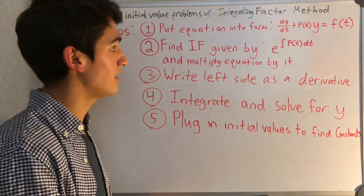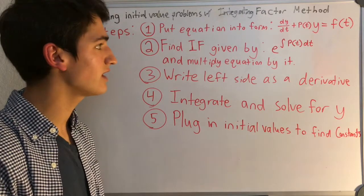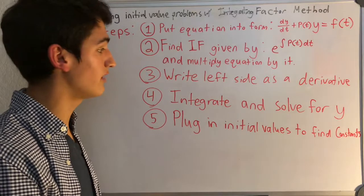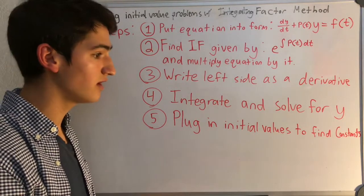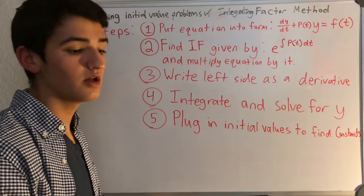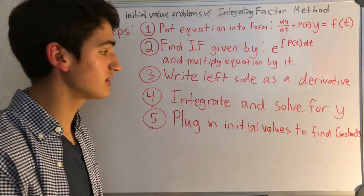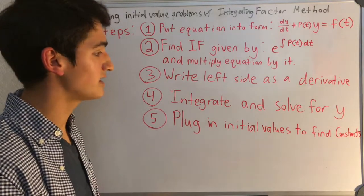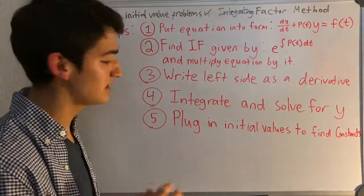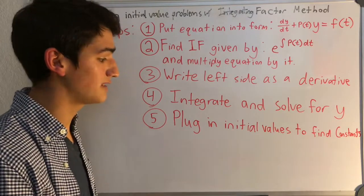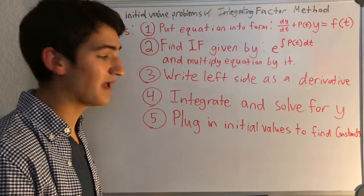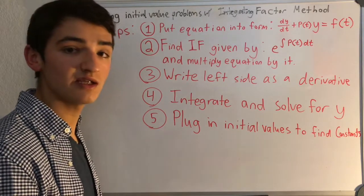Second, find the integrating factor, which you can find by using this equation, and multiply both sides of the equation by it. Third, you're going to write the left side as a derivative, which usually will be by using an inverse of the product rule, which is simply the integrating factor times y. Fourth, you're going to integrate and solve for y, and then you get your general equation. And if you have initial values, it's an initial value problem, and you can do step 5 to plug in the initial values and solve for the constants. Then you just write it back into your y equals equation. So let's move into some examples.